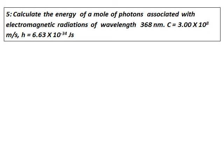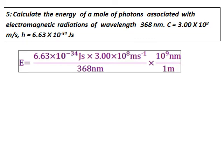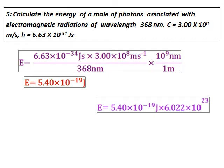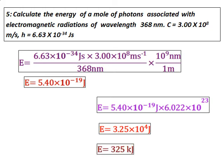Calculate the energy of a mole of photons associated with electromagnetic radiation of wavelength 368 nanometers. The velocity of light and Planck's constant are also given. First use the E equals H nu formula and calculate the energy — this is the energy associated with one photon. Since they are asking for the energy associated with a mole of photons, multiply it by Avogadro's number to get the energy associated with one mole of photons. The answer comes in joules; just convert that into kilojoules and report the answer.